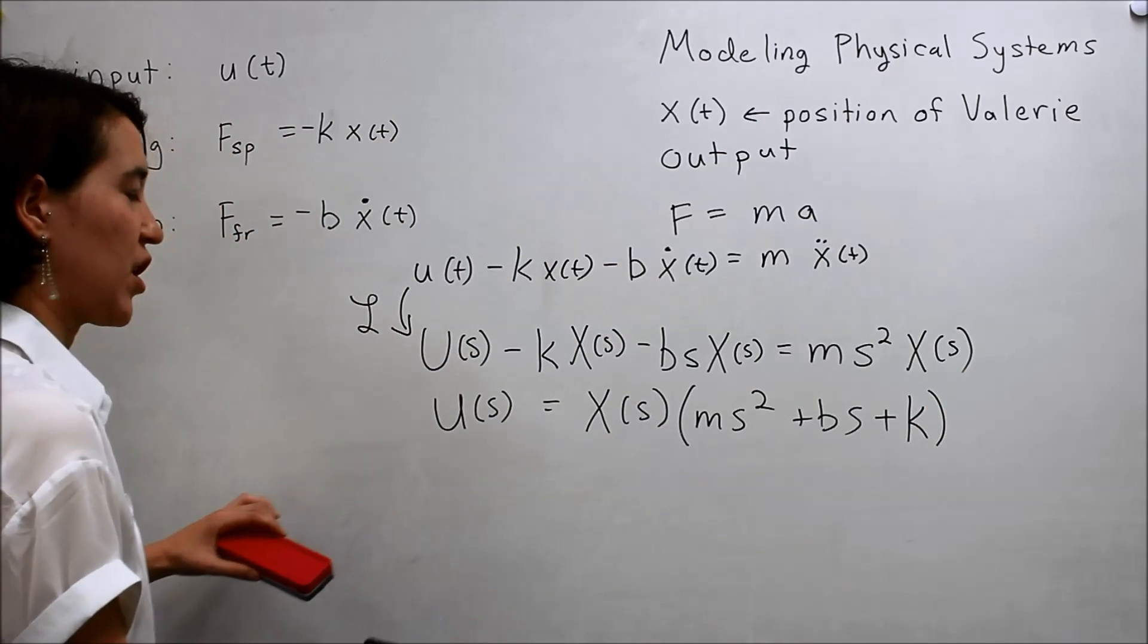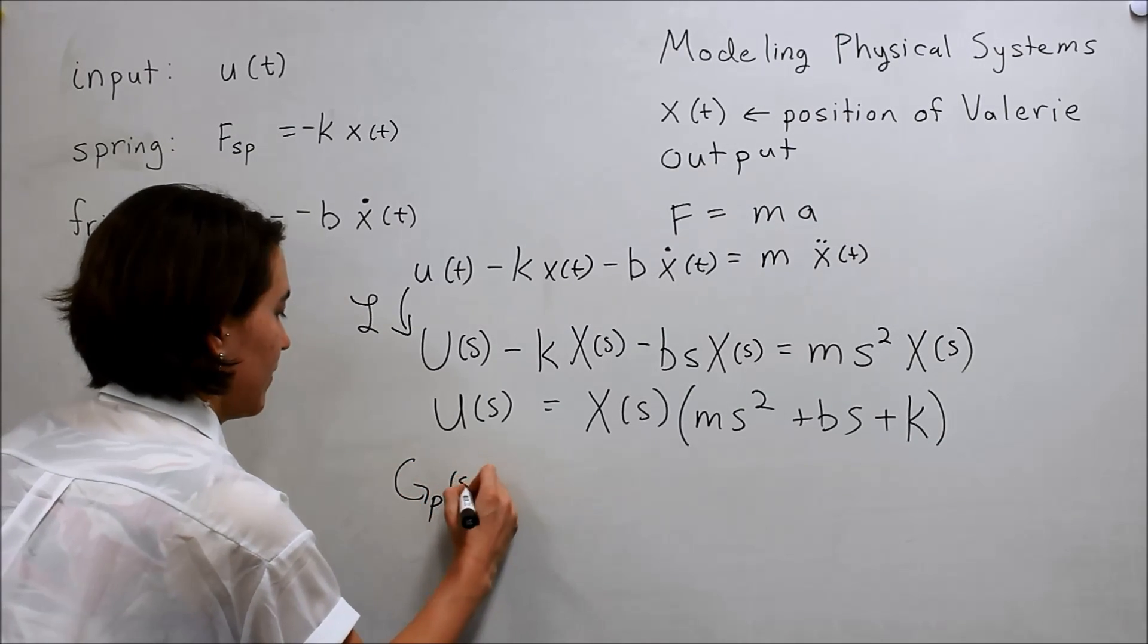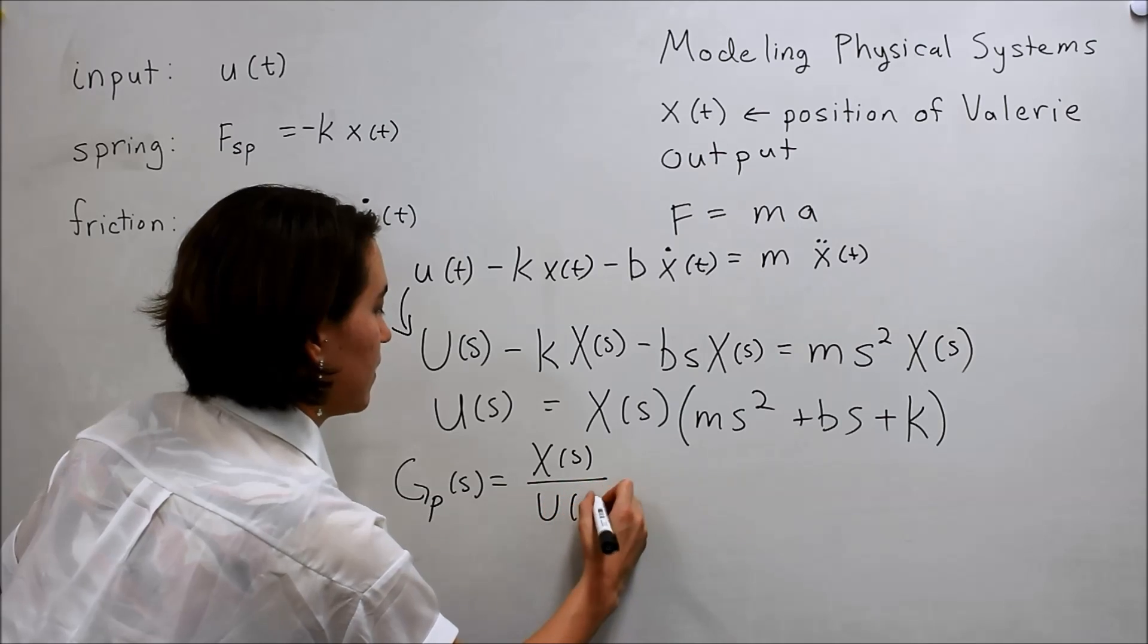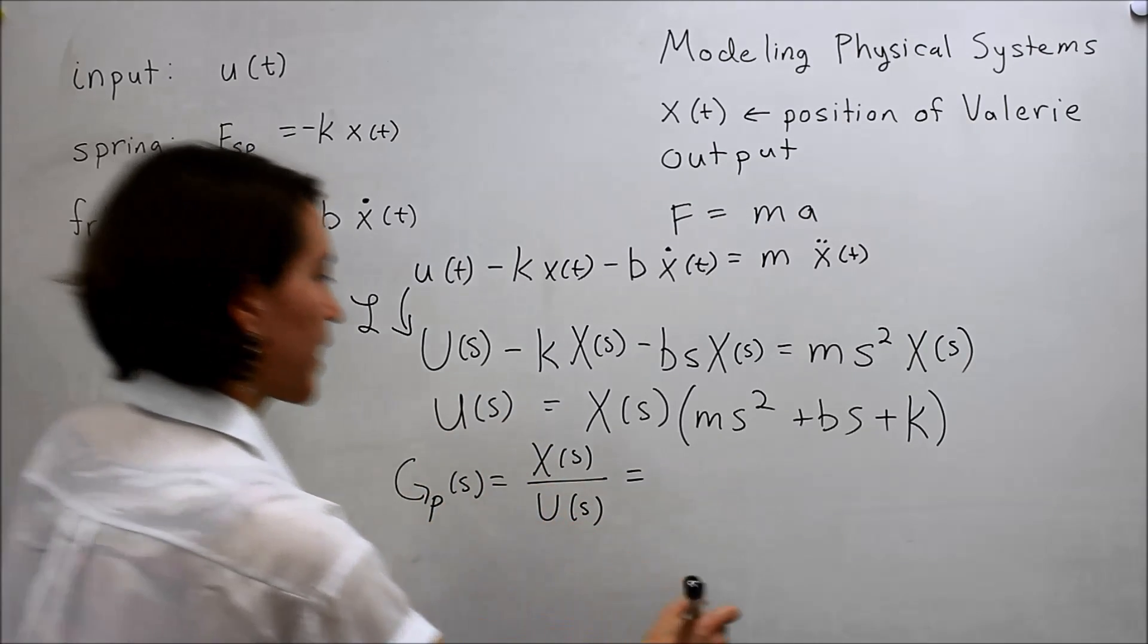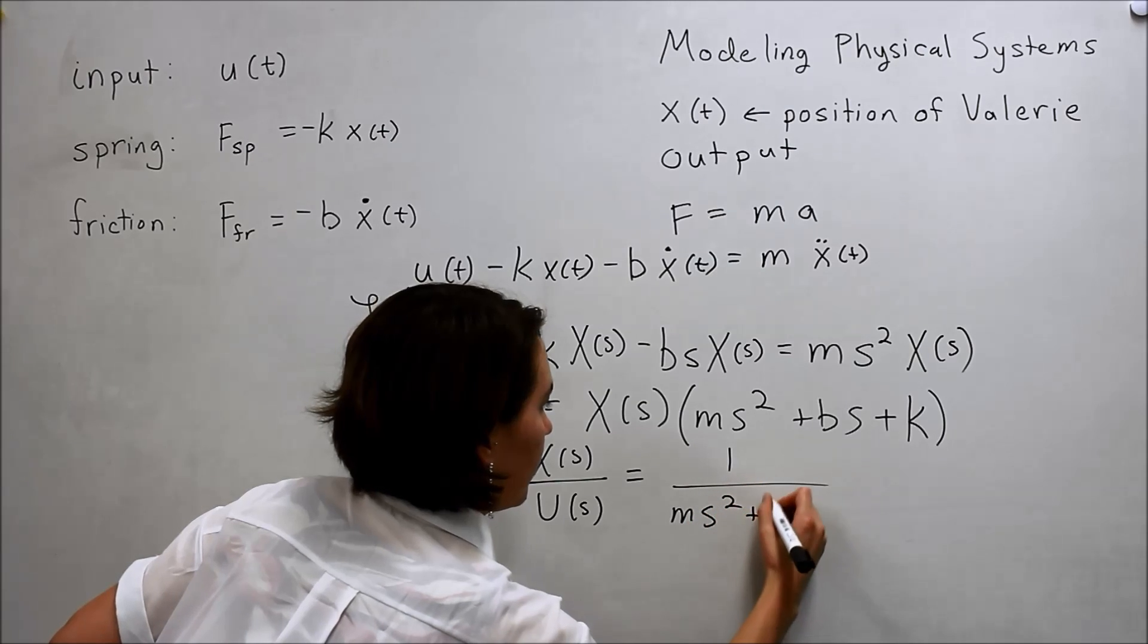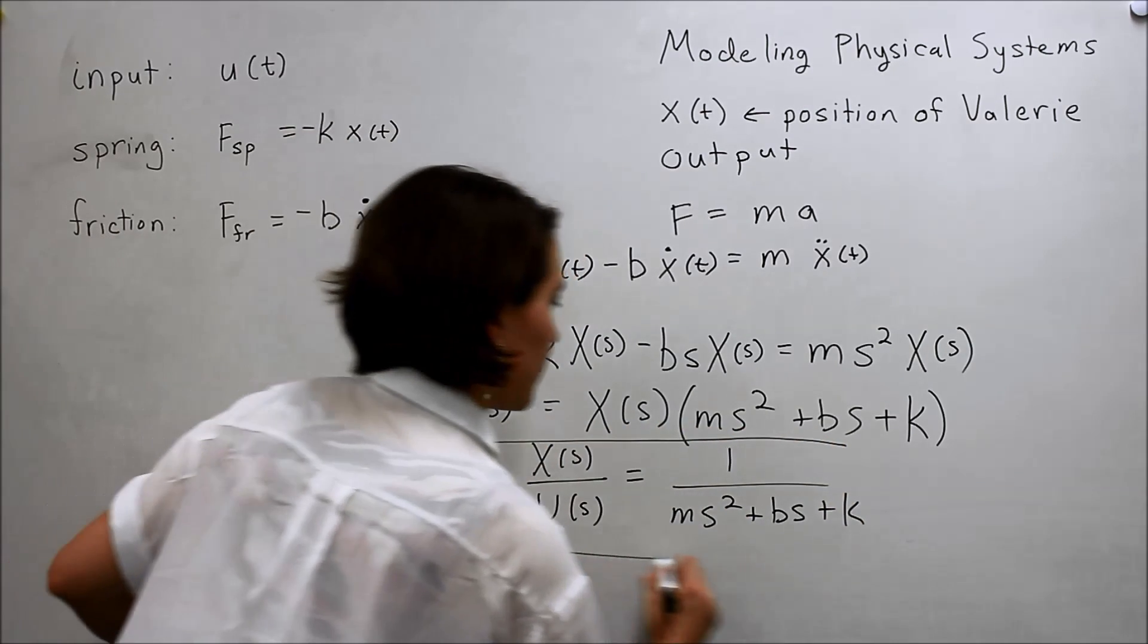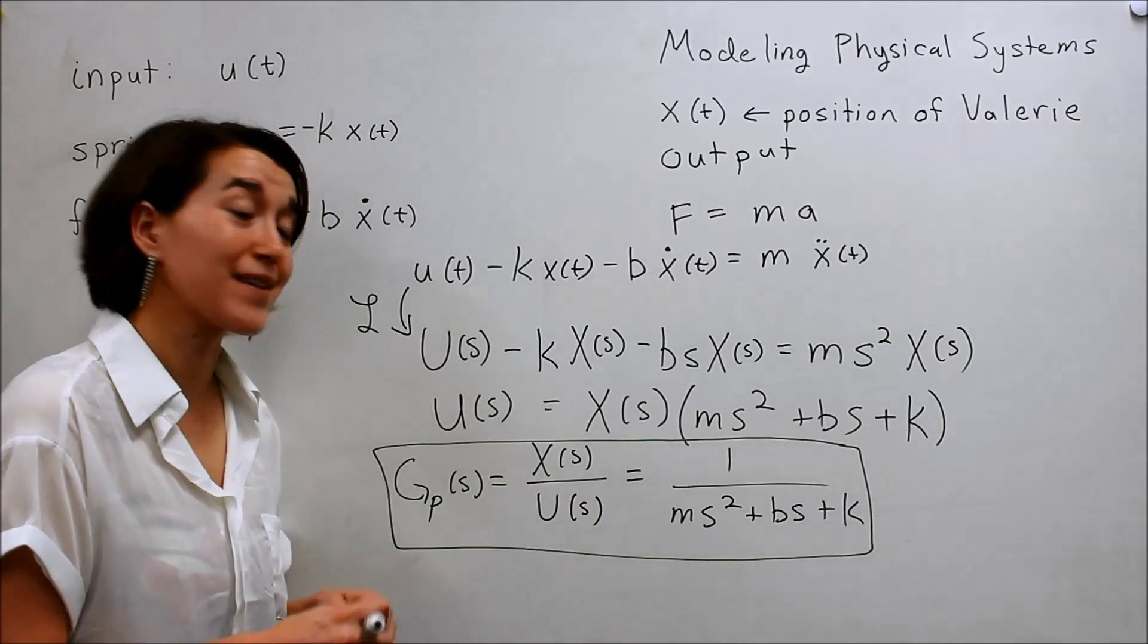So it's looking good. Now let's put it in our transfer function form. So the transfer function of the plant, our output is X(s) over our input U(s). Alright, so if we move this around again, we get one over this value. And that works out very nicely for us. So this is our transfer function for our Valerie attached to a Hyunminokcha box system. So we're done.